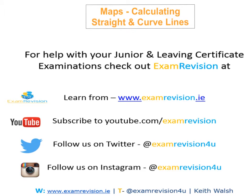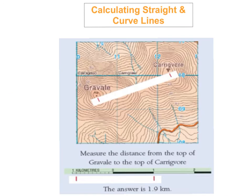In today's tutorial we're going to look at how to calculate straight and curved lines on an orderly survey map. The first calculation we're going to make is of a straight line. If you have two points — this point here and this point here — you're asked to calculate the distance from this point to this point.